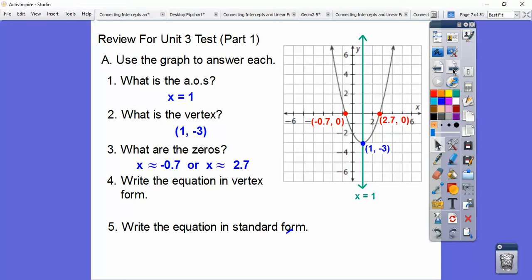So write an equation in vertex form. Vertex form is with the hk action right there, and hk is this. So it's going to be x minus this 1 squared minus 3 right here. And then what is a? Well, a is 1, because when we go over 1, it goes up 1.